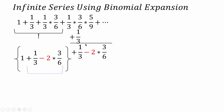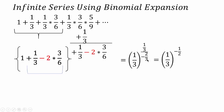On simplifying, 1 plus 1 by 3 minus 2 into 3 by 6 gives 1 by 3 as it is, and simplifying further gives minus 2 over 3. On further simplification, this results in the square root of 3, which is the required result. So this infinite series is equal to root 3.